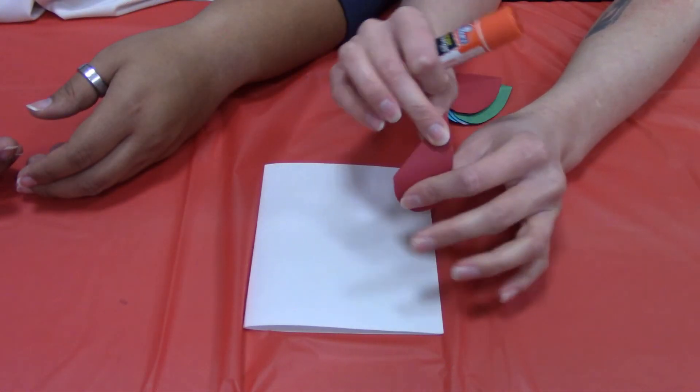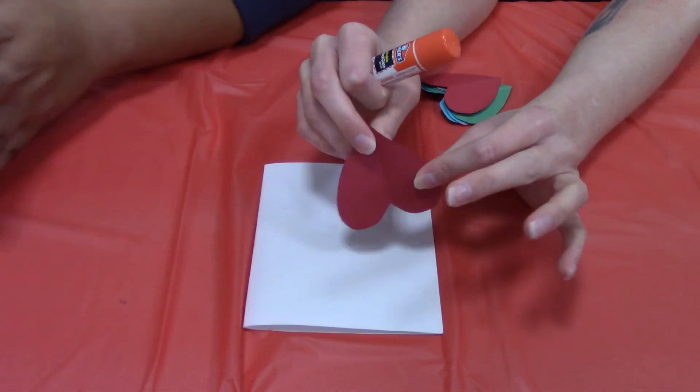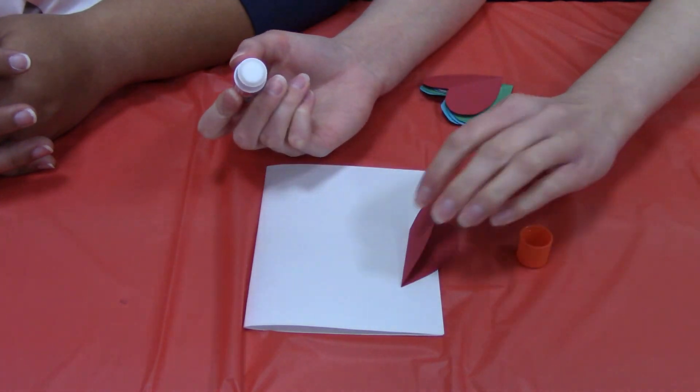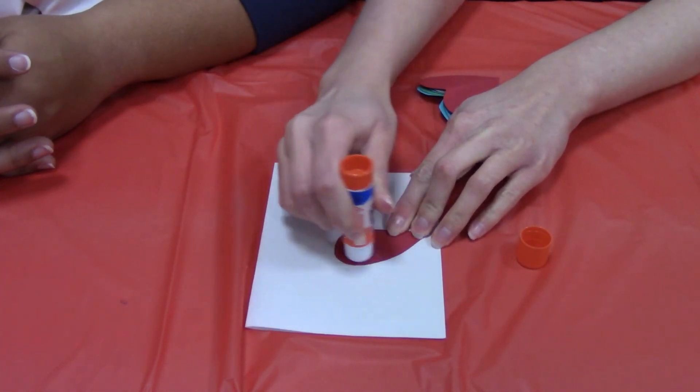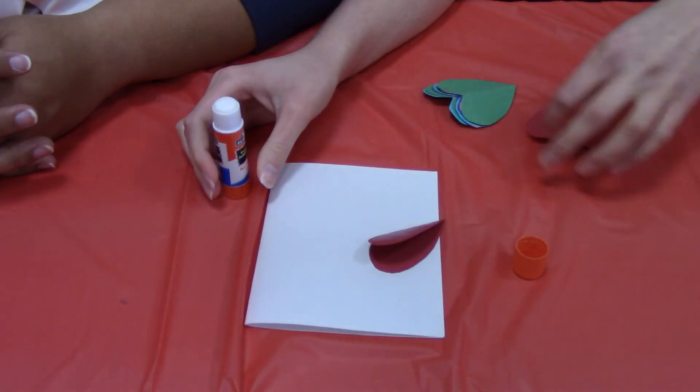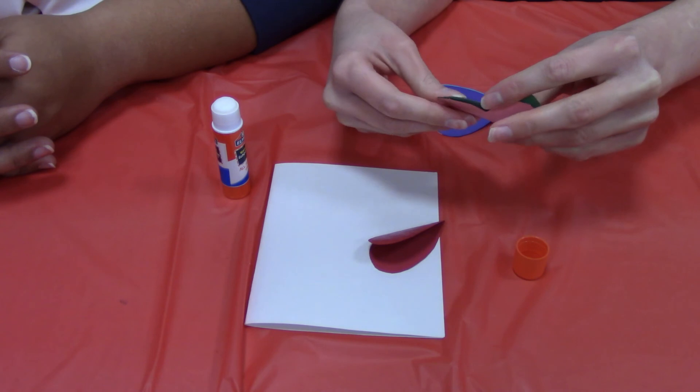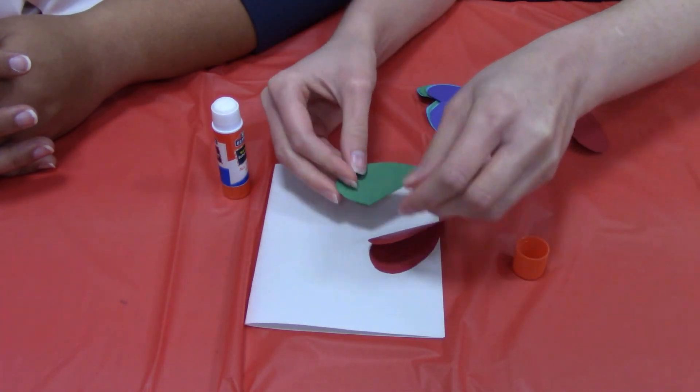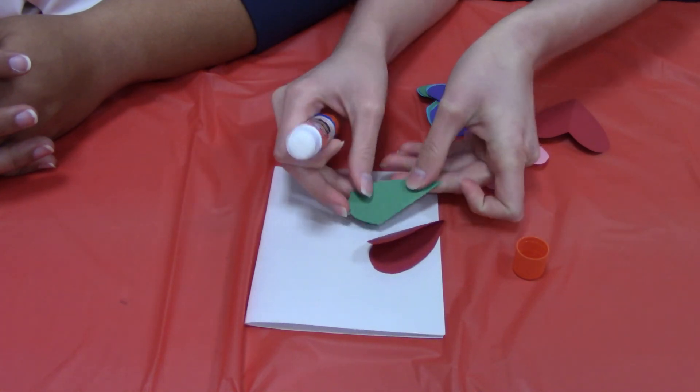So you just want to take the first little heart, and that should be folded in half, and then you're just going to take your glue stick and put glue on half of it. And then before you do anything else, I would take another one of the little hearts, and then put glue on the opposite side, so they go together.